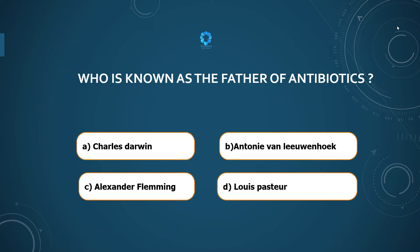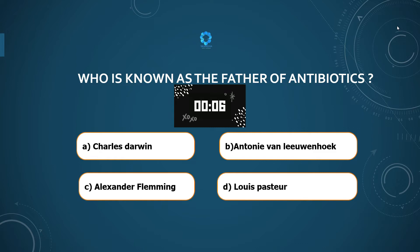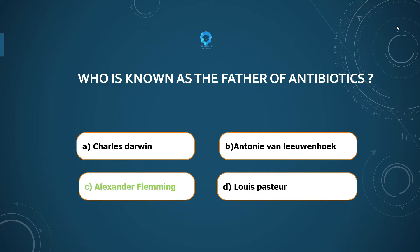Hi, welcome to Skanda Happy Learning. First question: who is known as the father of antibiotics? Charles Darwin, Antonio van Leeuwenhoek, Alexander Fleming, or Louis Pasteur? The answer is Alexander Fleming.